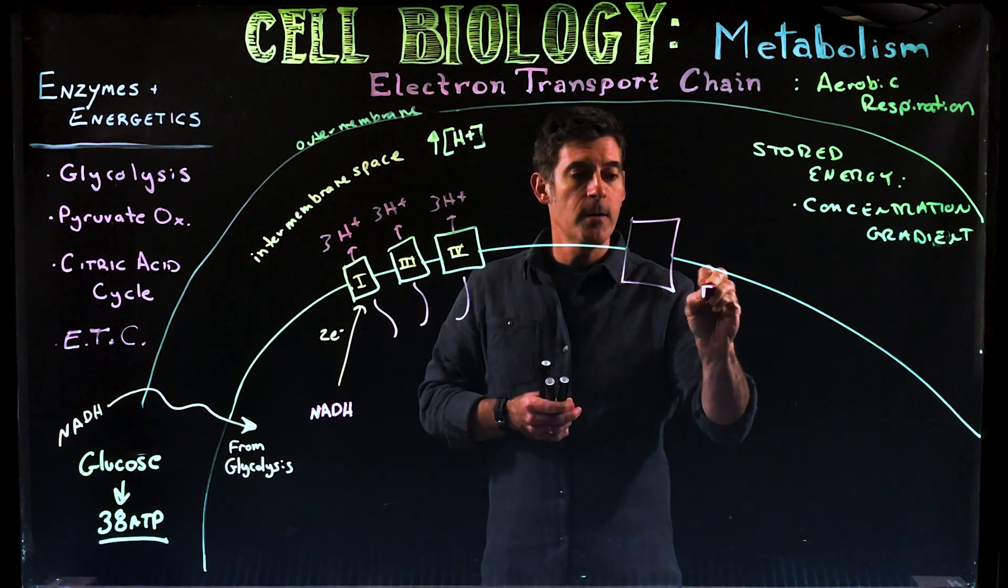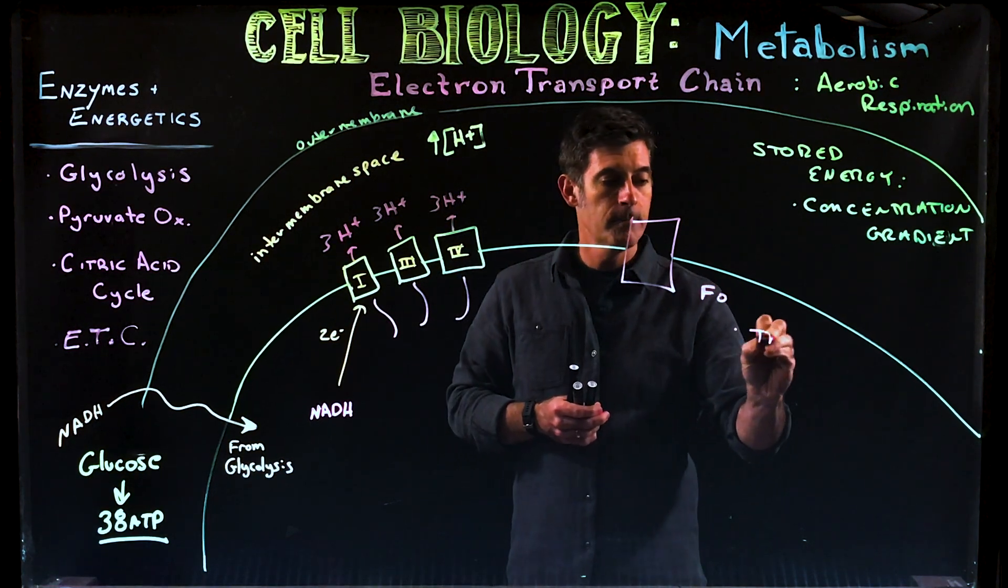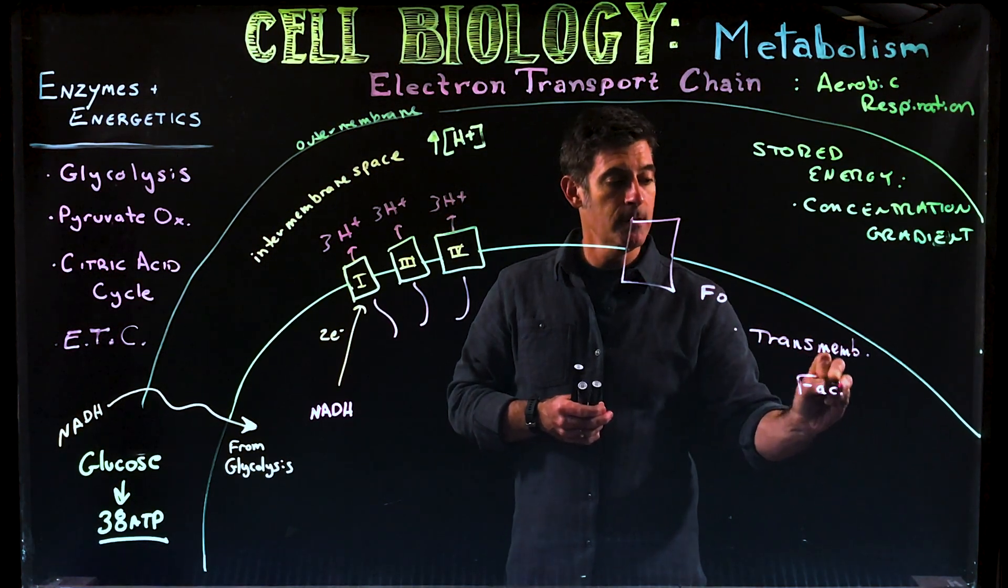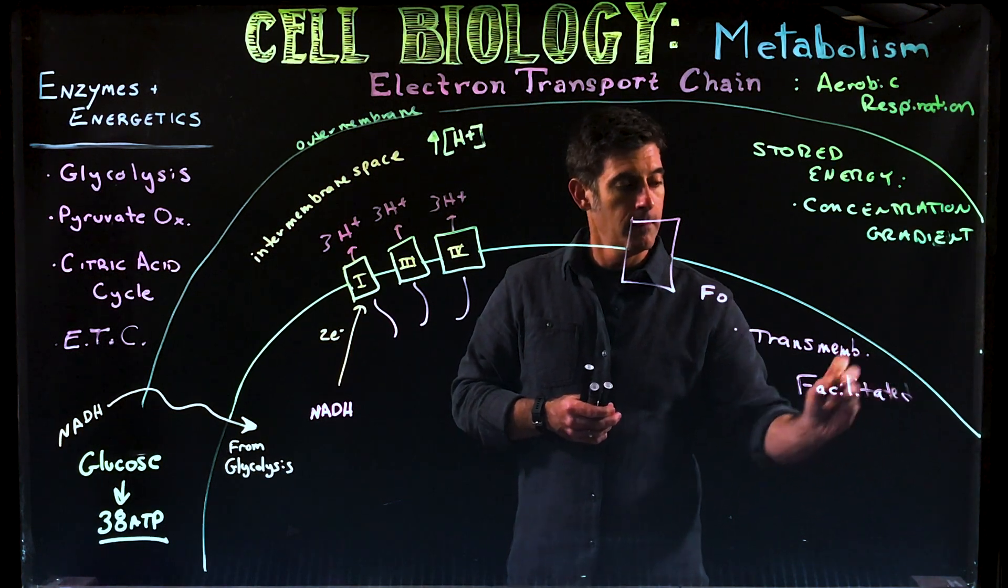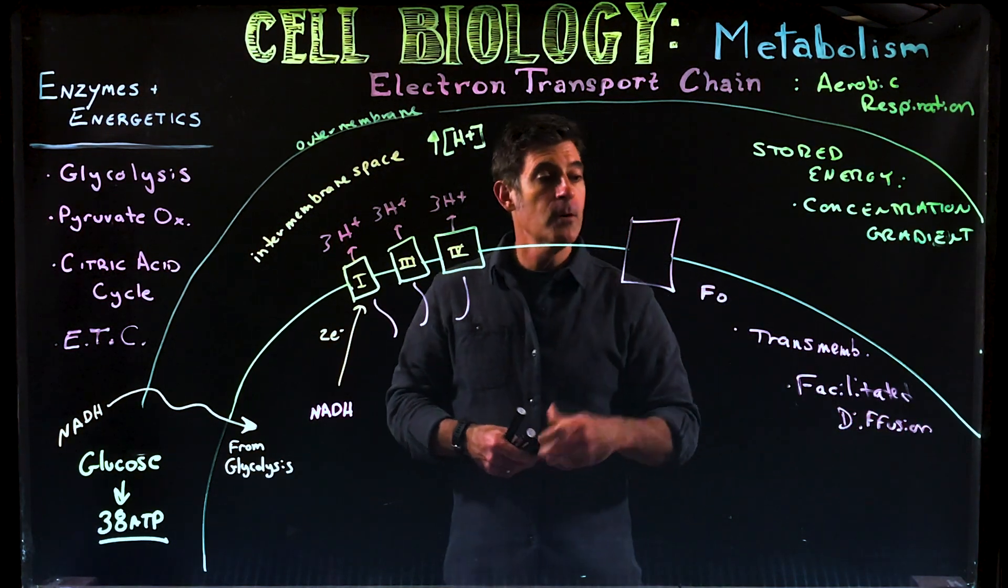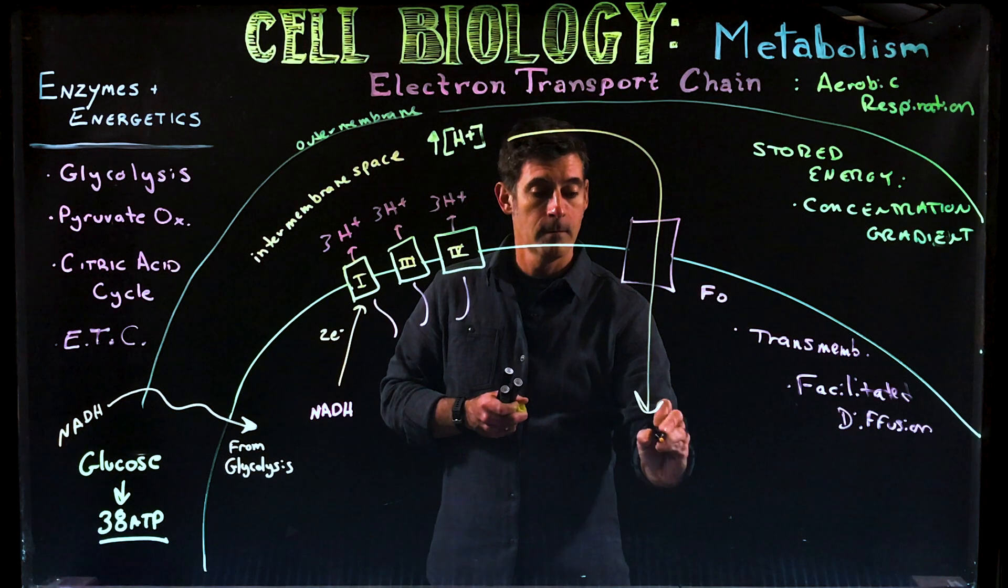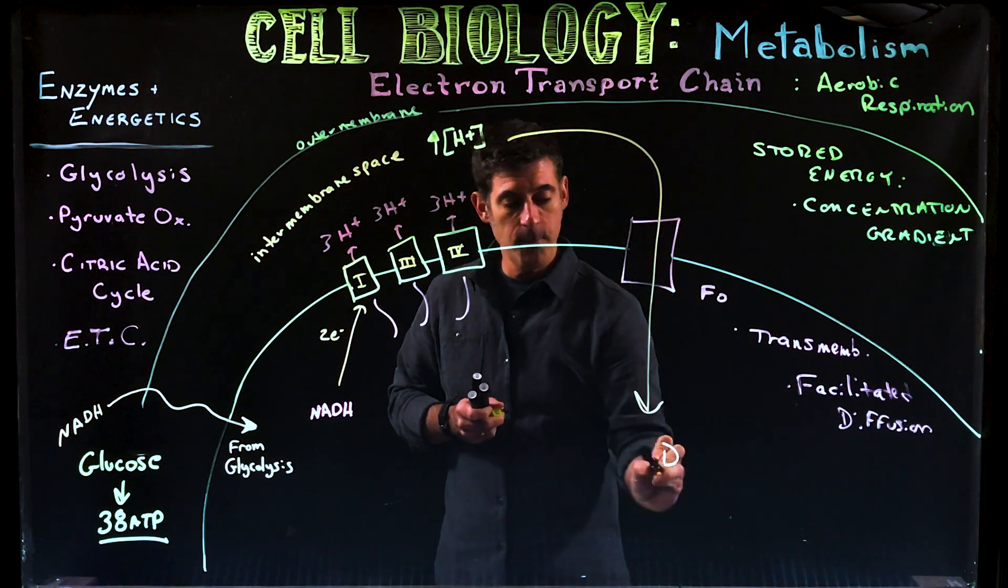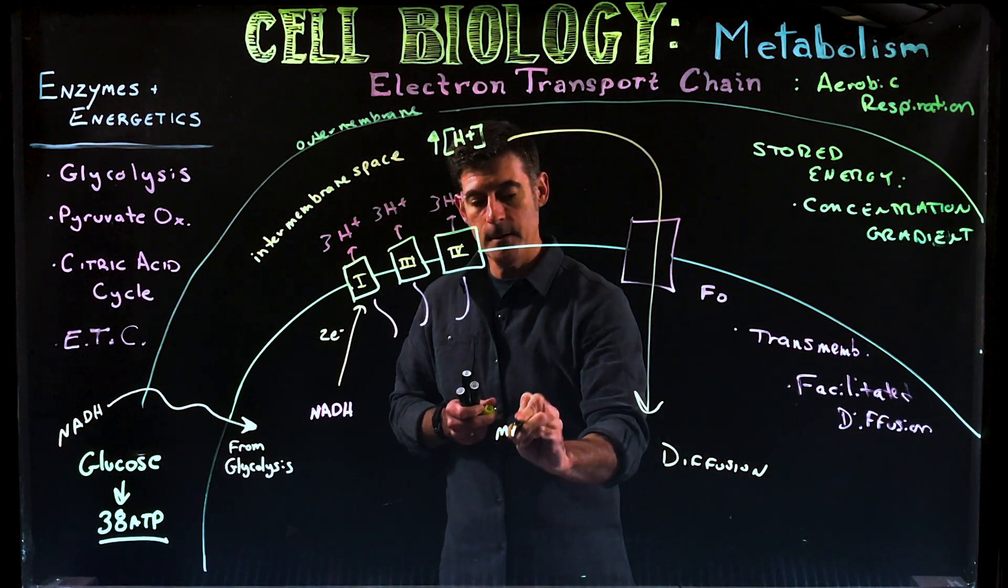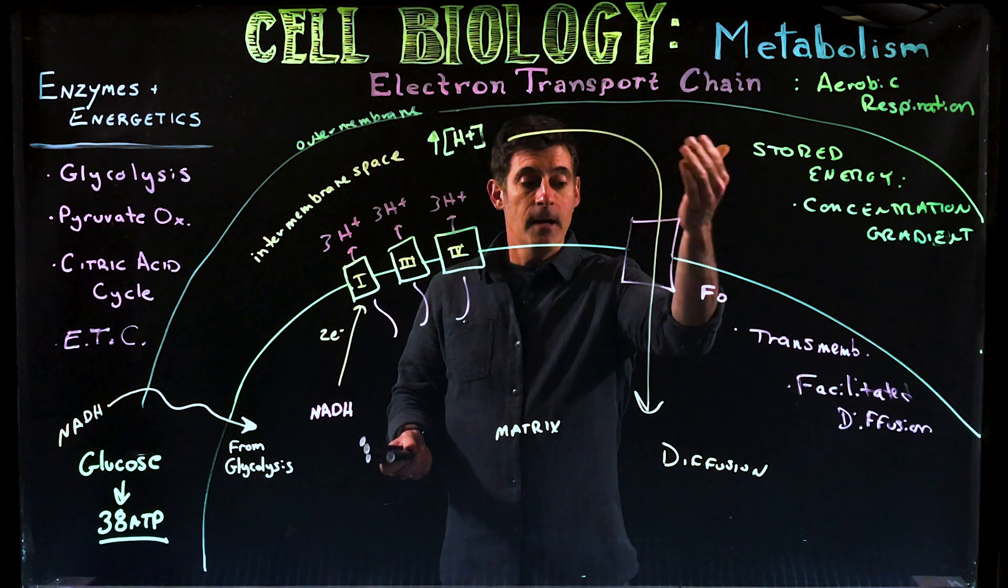Now what we have is a protein called F0. F0 is a transmembrane protein and it's going to allow facilitated diffusion. This is going to allow these protons to now diffuse from the intermembrane space back to the matrix. So this is the matrix here. And so the energy would be released. High energy, low energy.